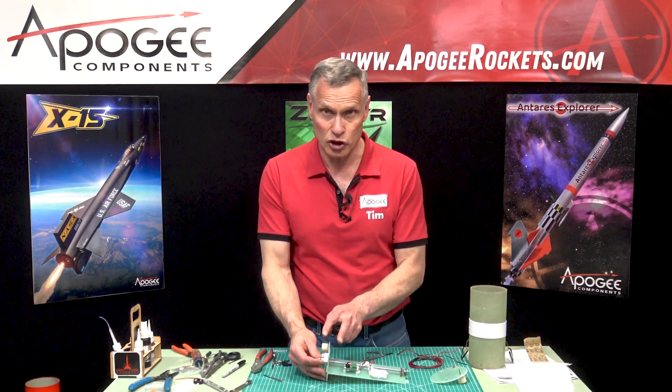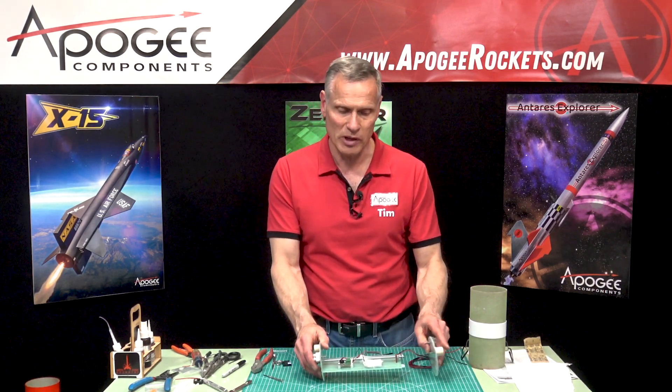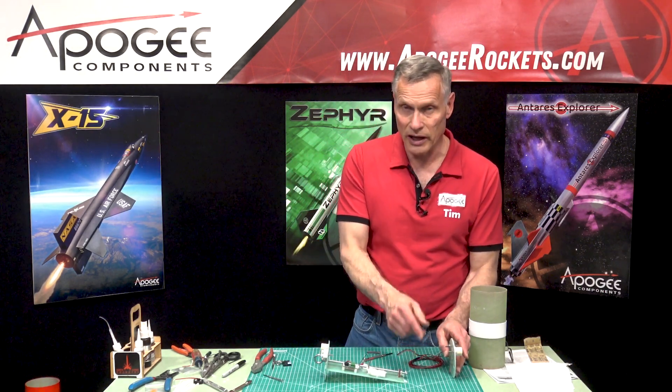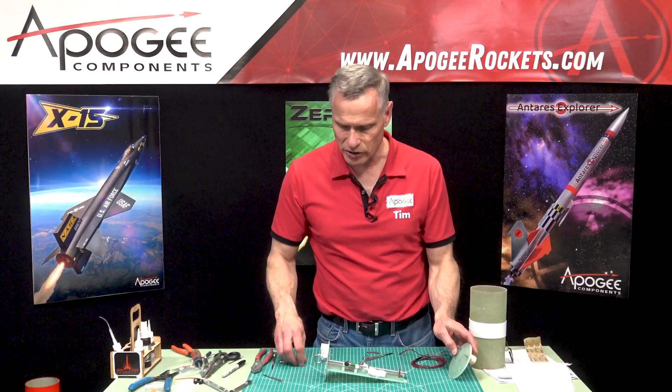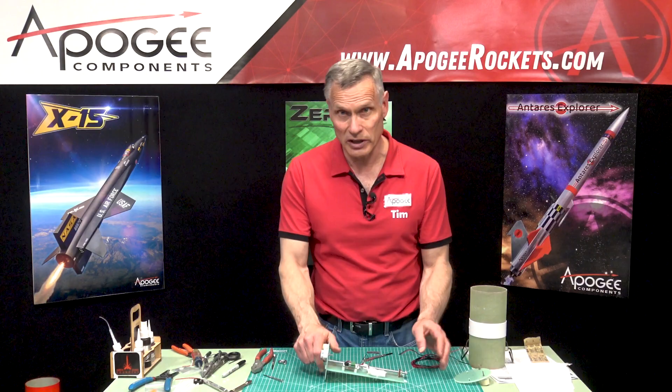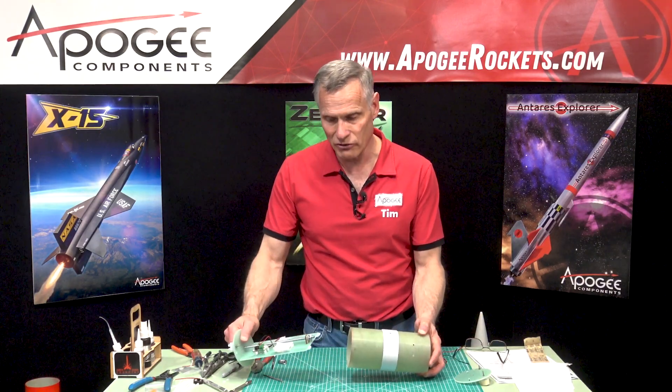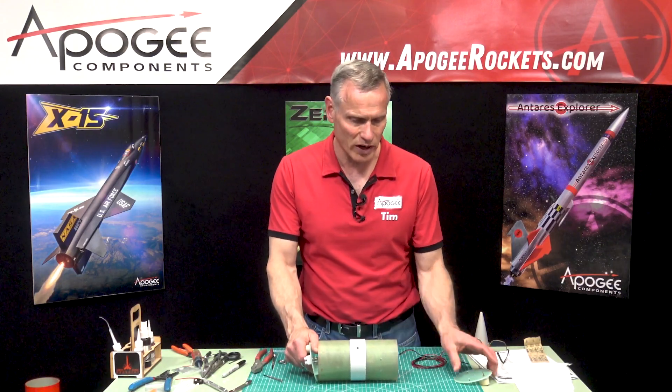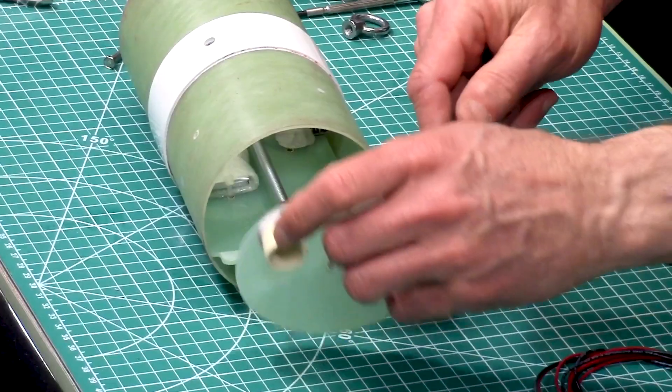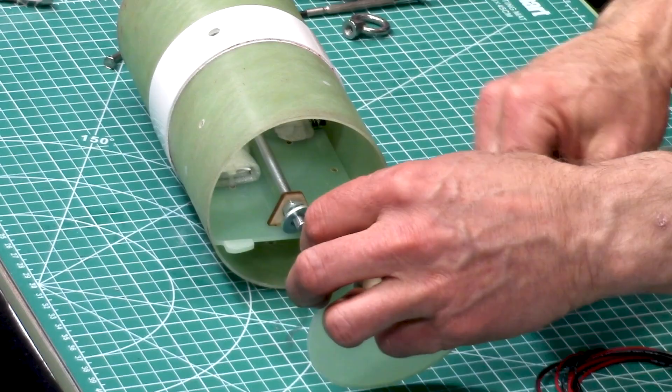So we're gonna make this one short and then this side we're gonna make long. The reason we want to make it long is we want to be able to pull this off and then reach in there, and there's going to be a connector that will allow us to separate the bulkhead completely so that we can take the bulkhead completely out of the tube coupler. So we want to make the wires here long enough so that when it's in the tube coupler and we pull it off a little bit, we can reach in and disconnect the connector that's going to be on that end.